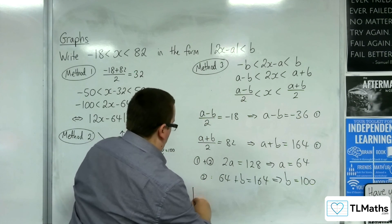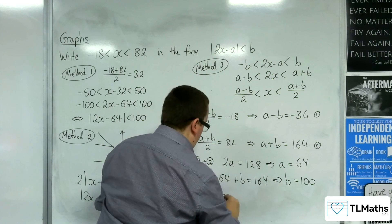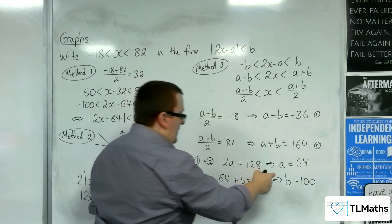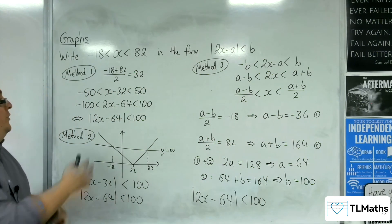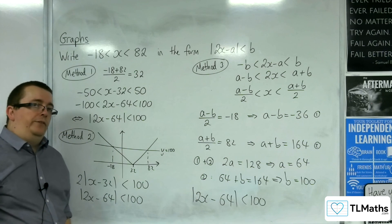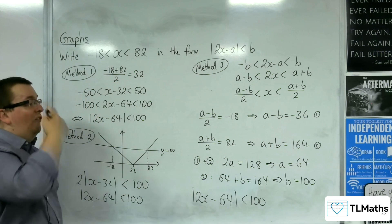And so the format is |2x - a|, |2x - 64|, is less than b, which is the 100. And so we have three separate methods that enable you to find the correct values of a and b.